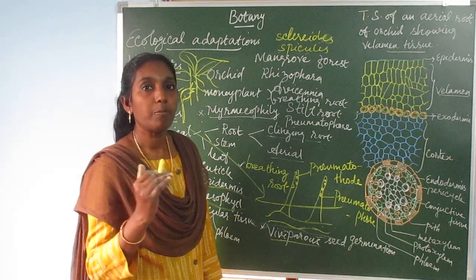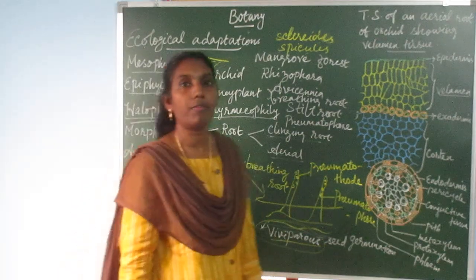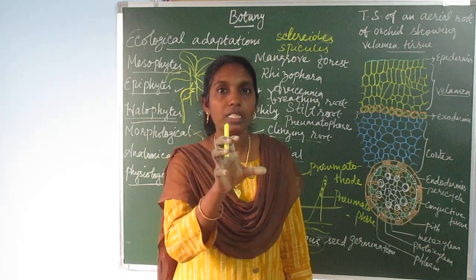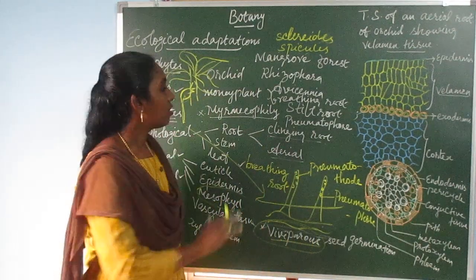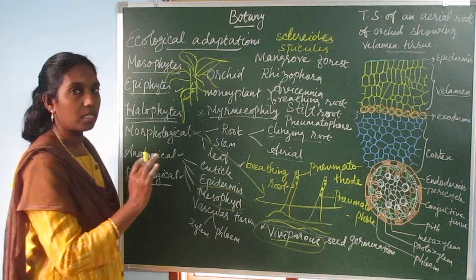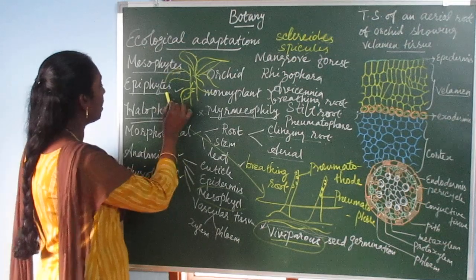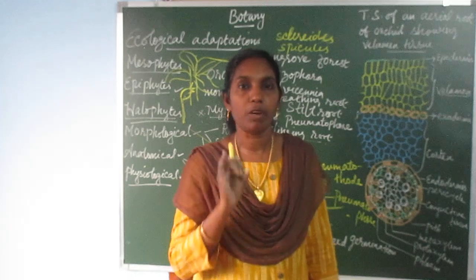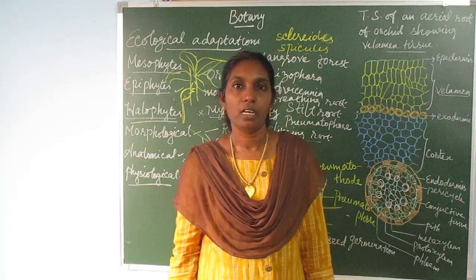For physiological adaptations of halophytes, the important point is vivipary. In vivipary, the seed germinates within the fruit, and after germinating it falls off and develops normally. These are the adaptations observed in halophytes. To summarize, today you learned the ecological adaptations — morphological, anatomical, and physiological — observed in Mesophytes, Epiphytes, and Halophytes. Thank you.